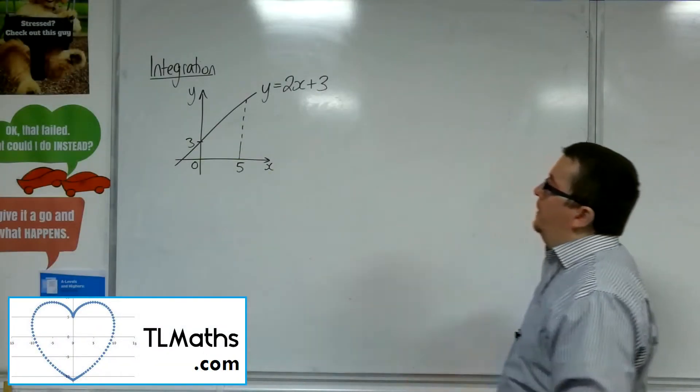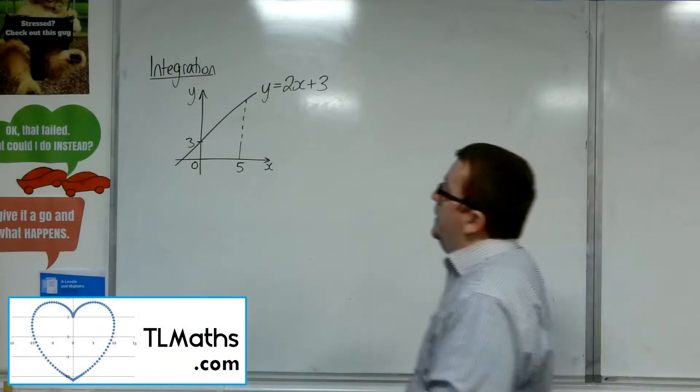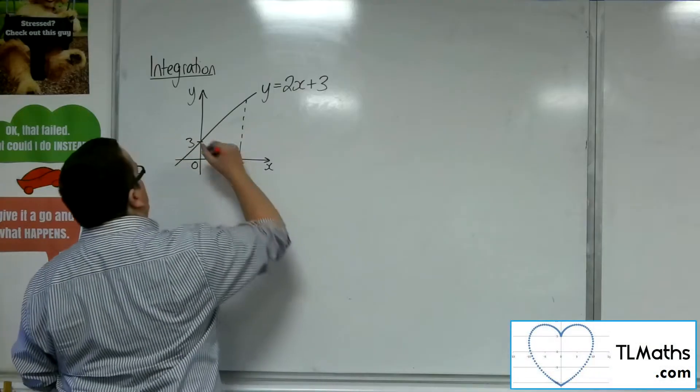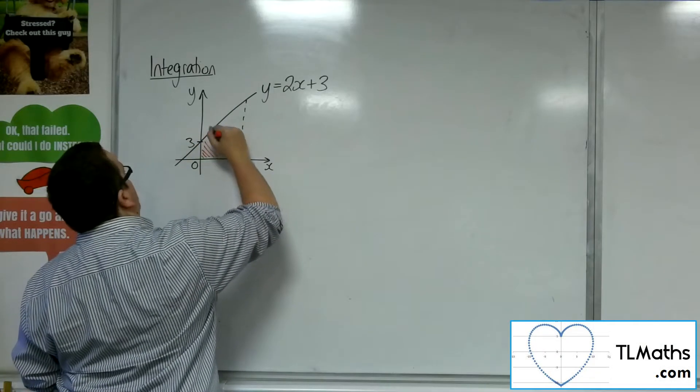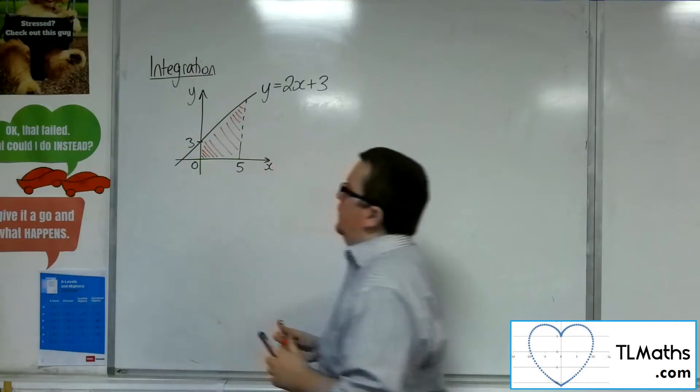Okay, so let's say I've got the line y equals 2x plus 3, and I want to find the area between the line and the x-axis here.